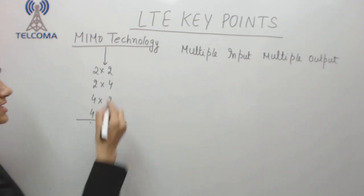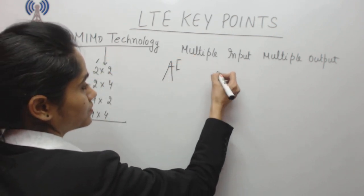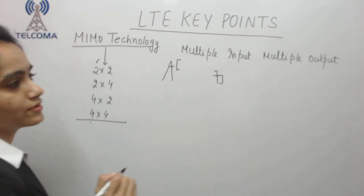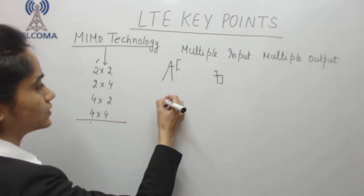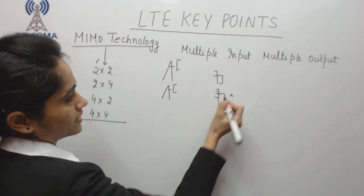It means that 2 transmission receivers at network end and 2 transmitter receivers at UE end. 2x4 is 2 at network and 4 at UE end which is not at all practical.